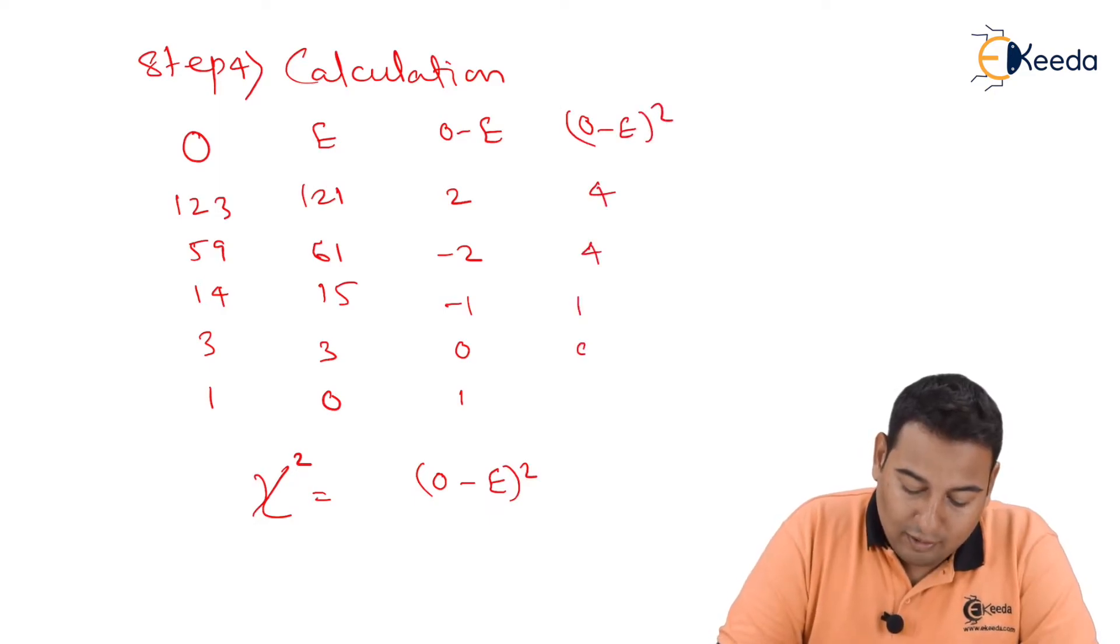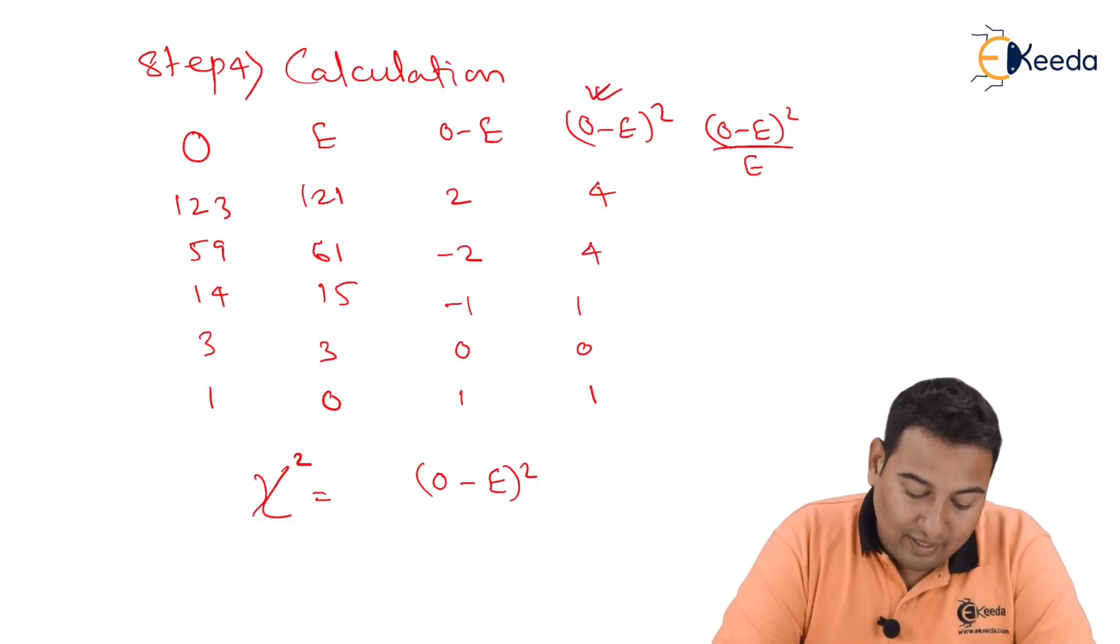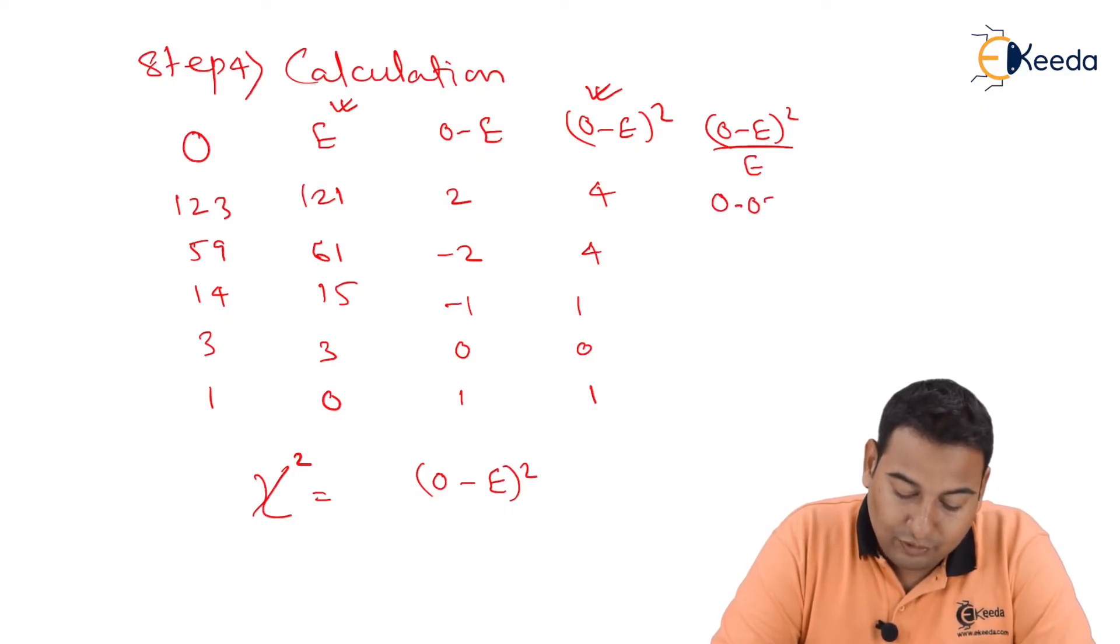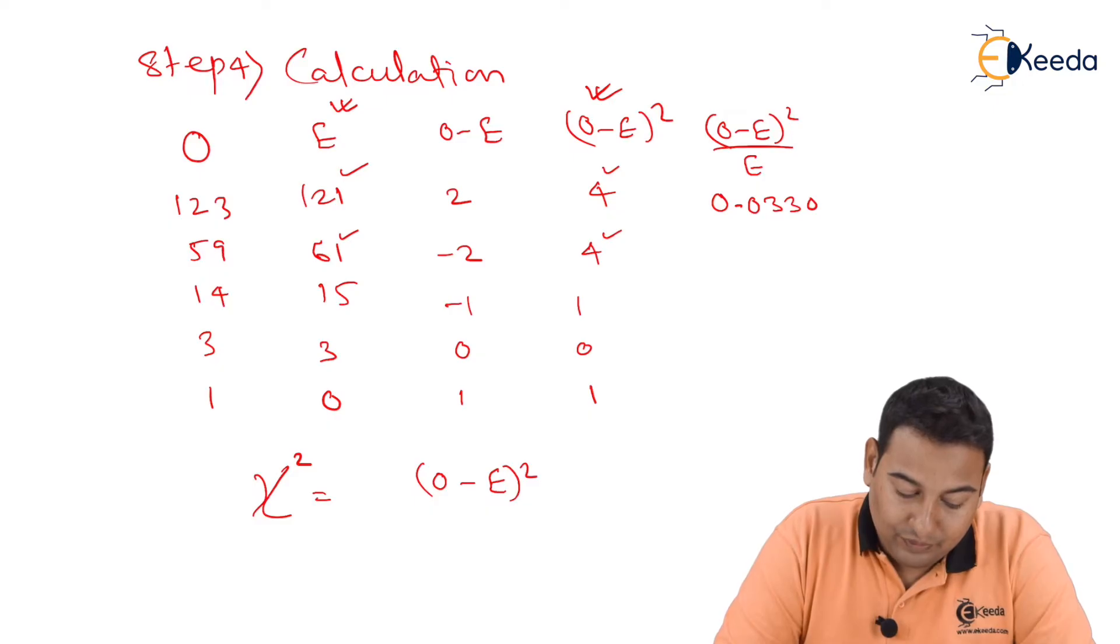4, 4, 1, 0, 1. Next, observed minus expected the whole square upon expected. That means I am going to divide this with this. So 4 upon 121 is 0.0330, this by this: 4 divided by 61 is 0.0655.